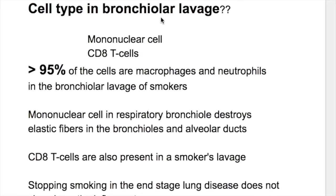What are the cell types in bronchial lavage? Mononuclear cells and CD8 cells. More than 95% of the cells are macrophages and neutrophils in the bronchial lavage of the smoker. Mononuclear cells destroy elastic fibers in the bronchioles and alveolar ducts.